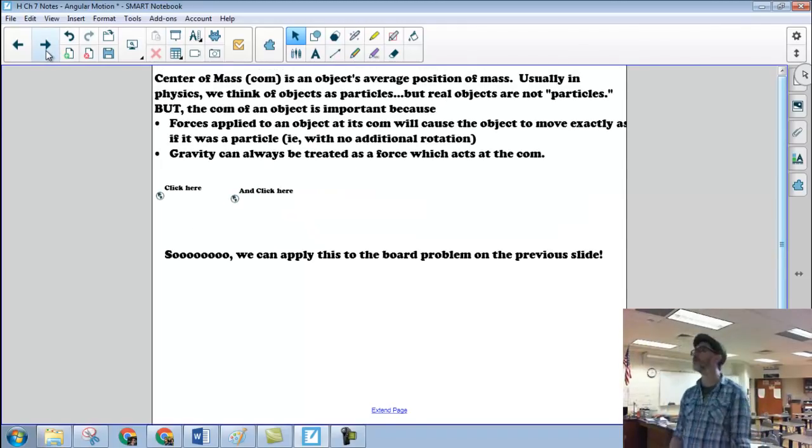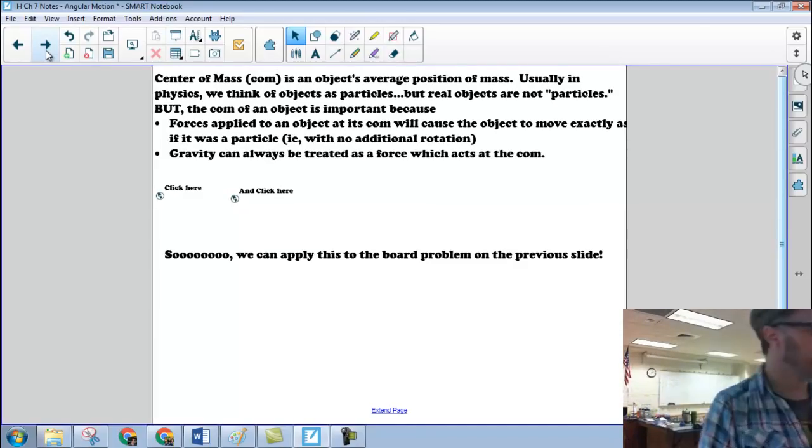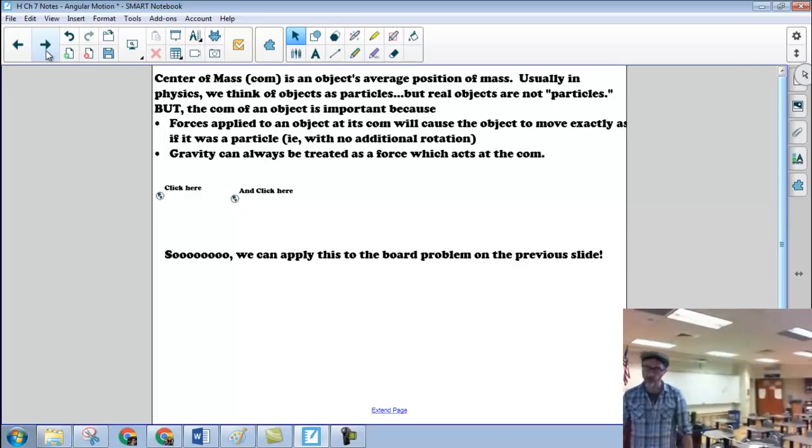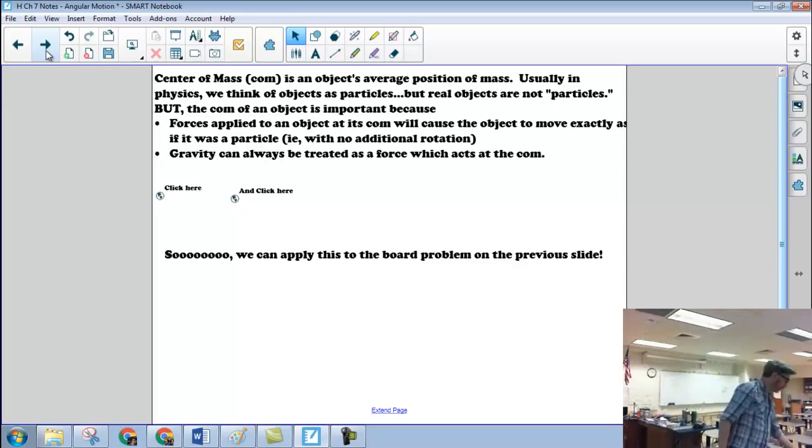So center of mass, it's an object's average position of mass. Usually, most of the problems we've done so far, we've dealt with an object as a particle. Like, I might say Mr. Hecker throws his coffee mug up in the air, right? And we don't worry about the fact that it spins and wobbles and turns. We treat it as a particle and it just moves through space as a particle. But real objects are not particles.